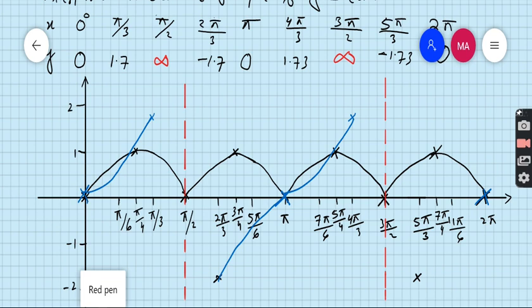This is the graph of tan x, this is the blue one is the graph of y equals tan x. So for black, the graph of y equals sin 2x and for blue, the graph is y equals tan x.